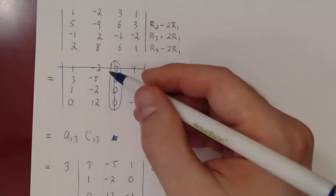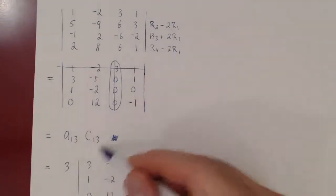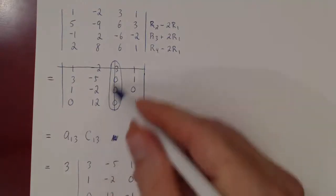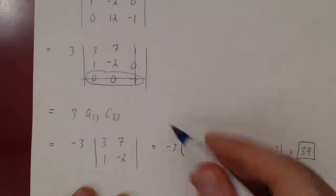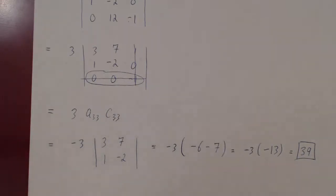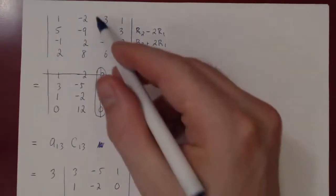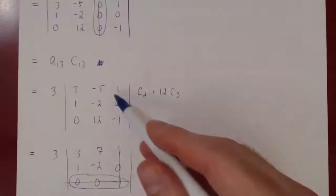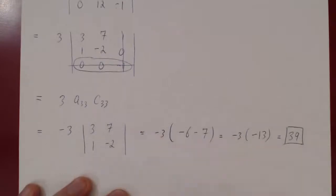This is always how you should find determinants: use row operations or column operations to get a column where all entries are 0 except one, or a row where all entries are 0 except one, then use cofactor expansion. In every case, you'll only have to compute one cofactor — here C₁₃, then C₃₃ — and you went from a 4x4 matrix to a 3x3 to a 2x2.